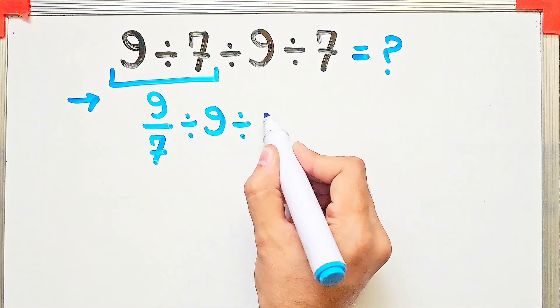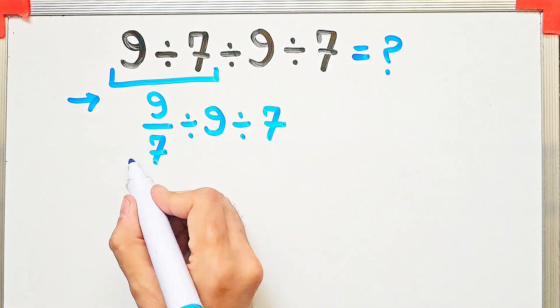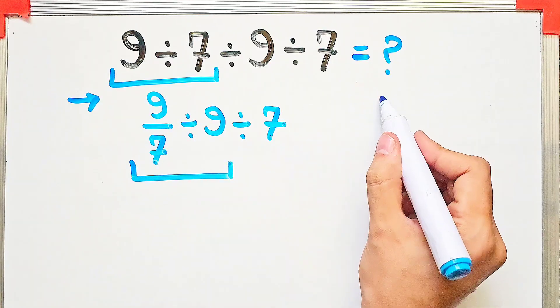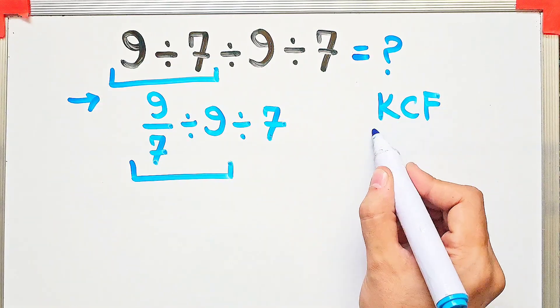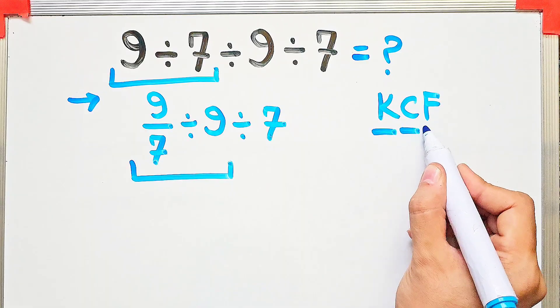Again, because we have 2 divisions, we start from the left and simplify. To solve this part, we need to follow the KCF rule. K stands for keep, C stands for change, and F stands for flip.